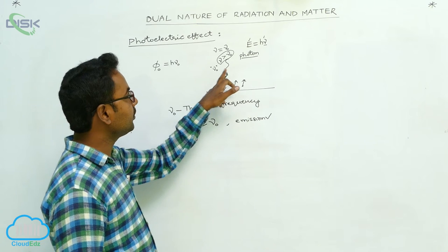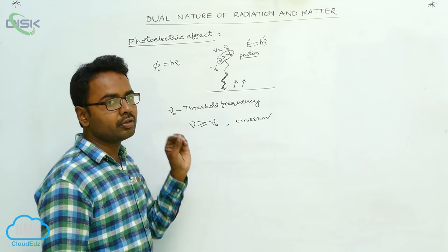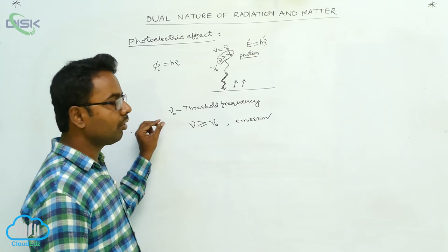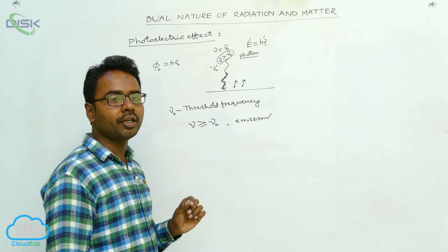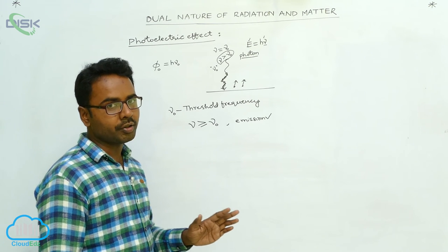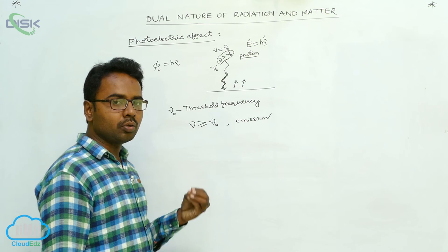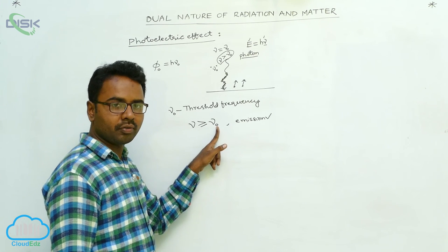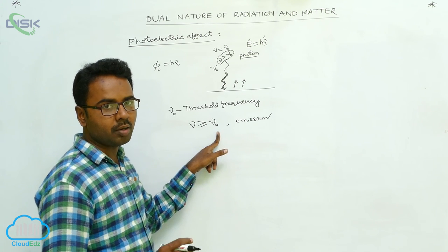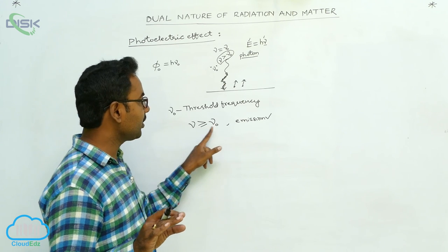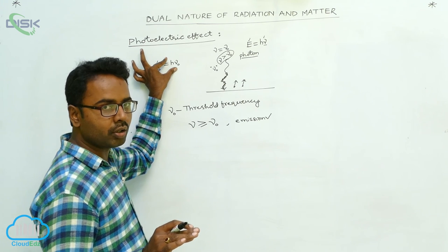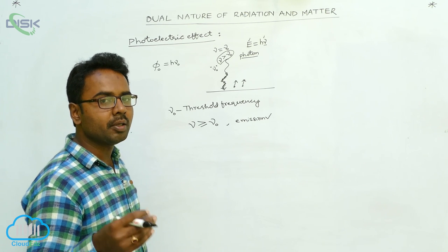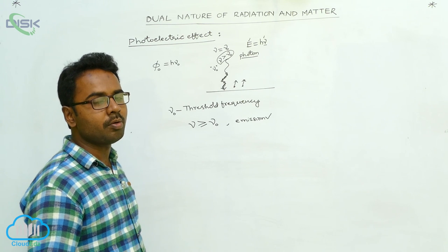If the energy of the photon is less than hν₀, it is not sufficient to eject an electron from the metal surface. For photoelectric emission to take place, the frequency must be either equal to or greater than the threshold frequency. If ν is greater than ν₀, the work function φ₀ is used to eject the electron, and the remaining energy is imparted to the electron as its maximum kinetic energy.